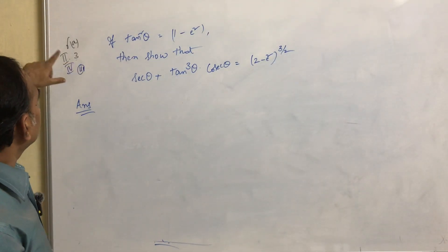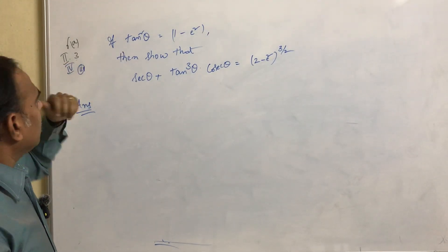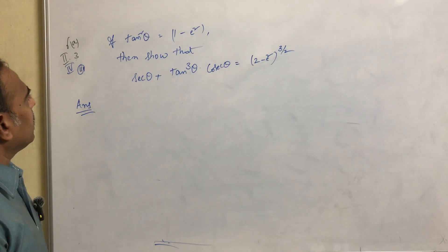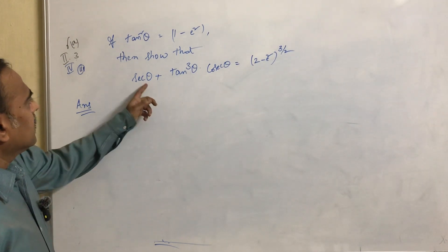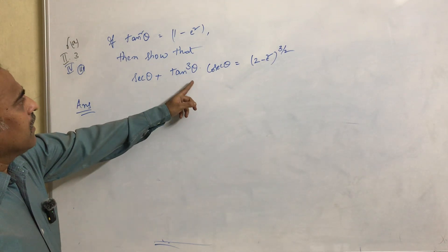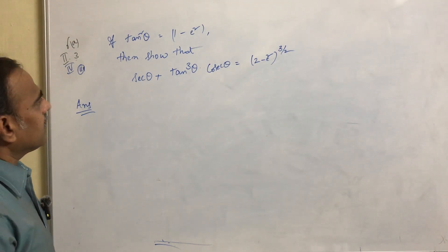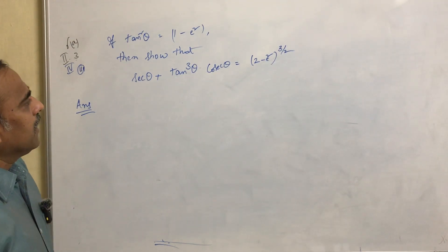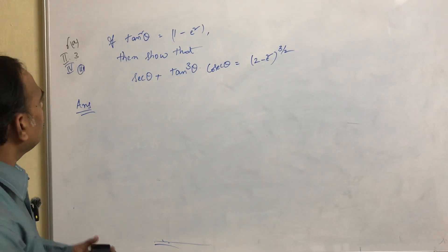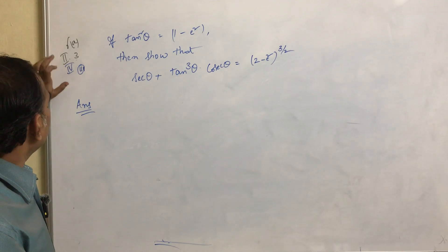We need to solve this equation. If tan squared theta equals 1 minus e squared, then we need to show that secant theta plus tan cubed theta into cosecant theta equals 2 minus e squared whole power 3 by 2. This problem is from exercise 6a, number 2343.